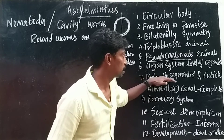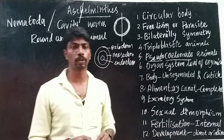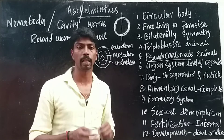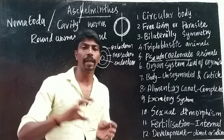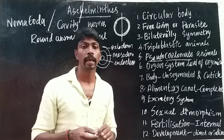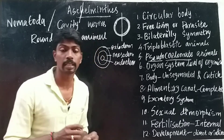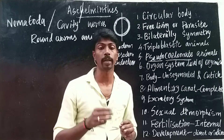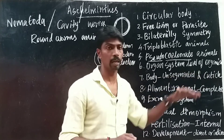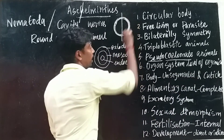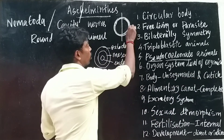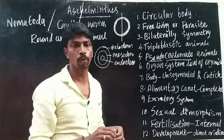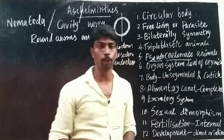The body is unsegmented and covered by a cuticle. In this group of animals, the body is unsegmented. The body is also covered by a transparent, tough protective layer known as the cuticle.